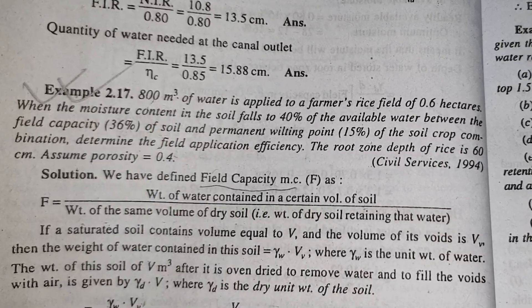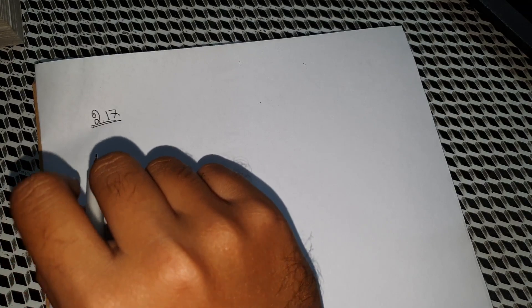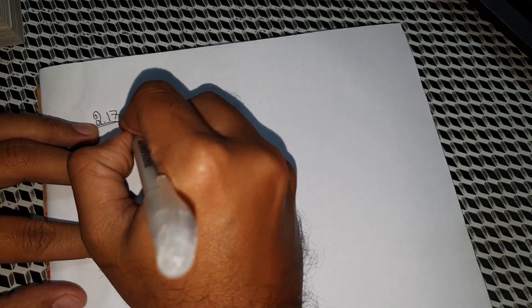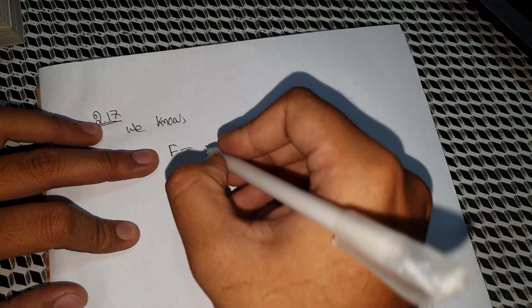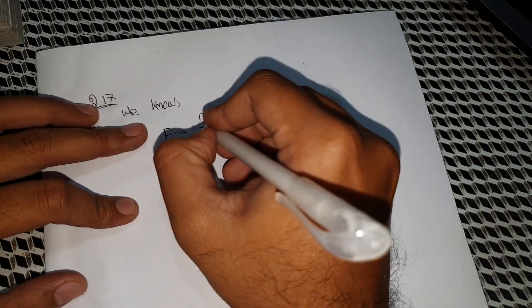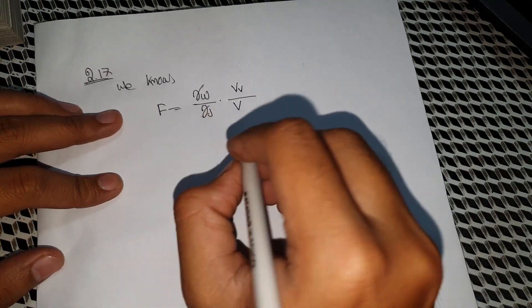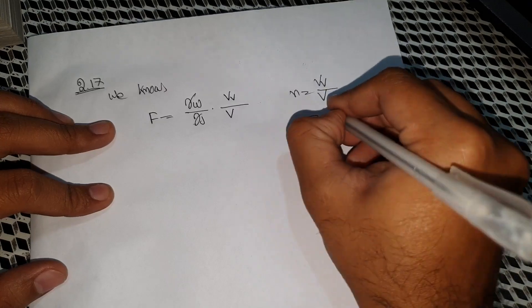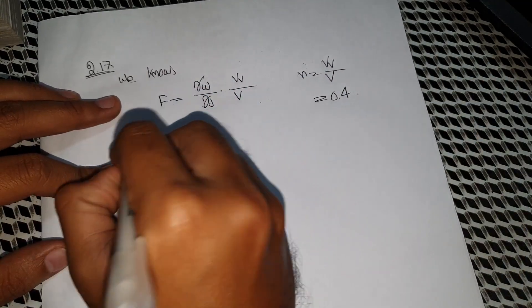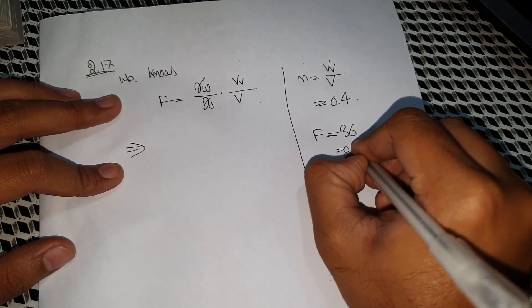Let's start with the equation we know. Field capacity f is equal to gamma w divided by gamma d, multiplied by volume of void divided by total volume. Porosity is equal to volume of void divided by total volume. Using these values, the equation gives field capacity as 2.36%, or 0.36.